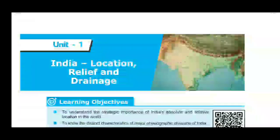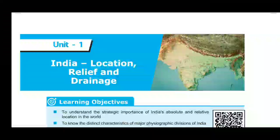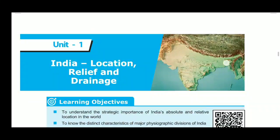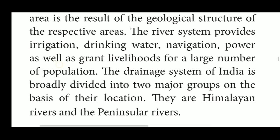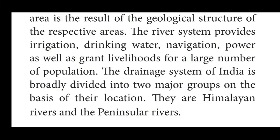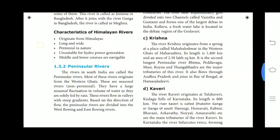Hello students, today we are going to learn about the Peninsular rivers, book page number 93. The drainage system of India is broadly divided into two major groups based on their location: the Himalayan rivers and the Peninsular rivers.